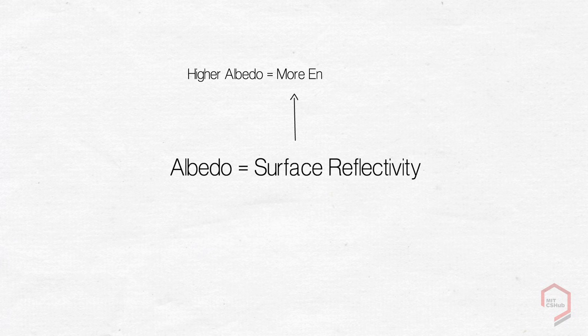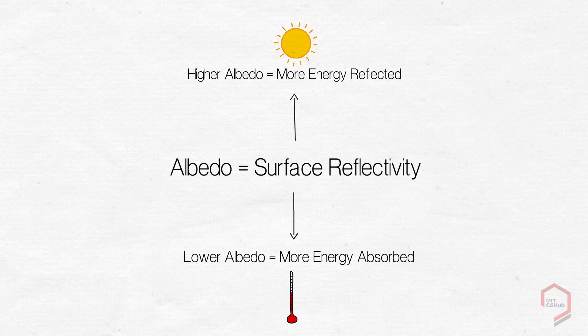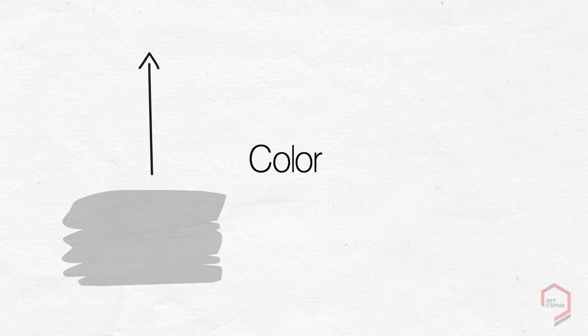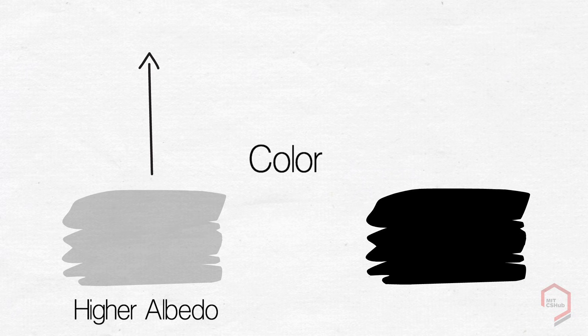The higher the albedo, the more energy is reflected, and the lower the albedo, the more energy is absorbed. We can actually measure the magnitude of albedo, in large part due to color. Lighter colored surfaces reflect more radiation and have a higher albedo. On the other hand, darker surfaces absorb more light and have a lower albedo.